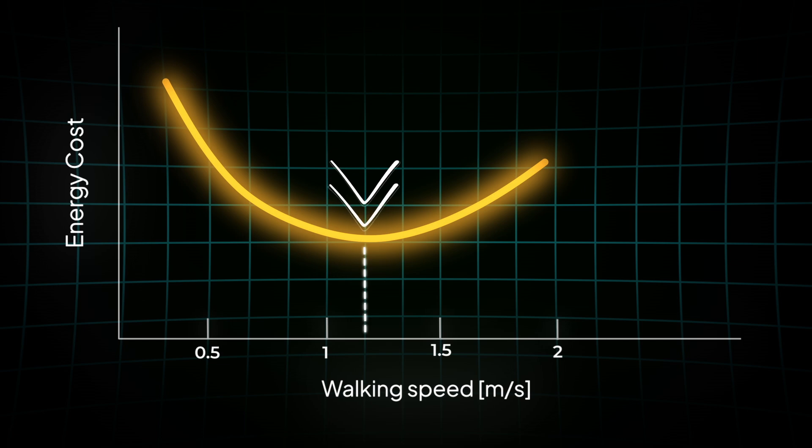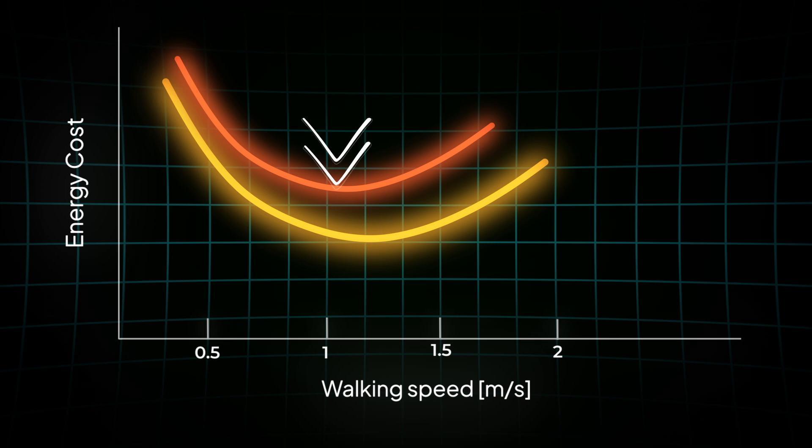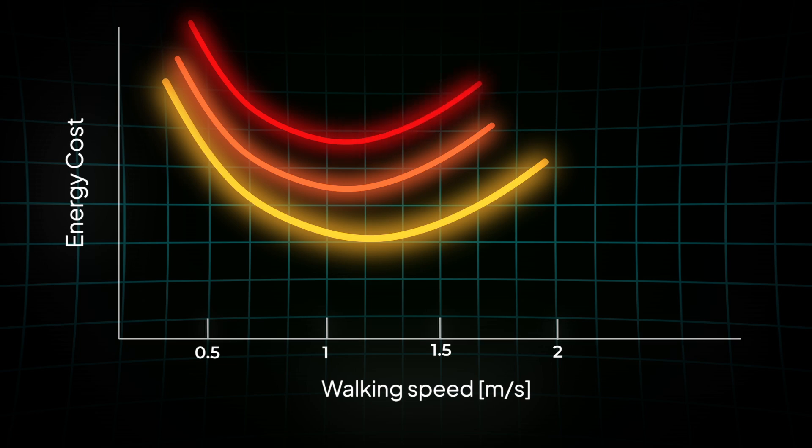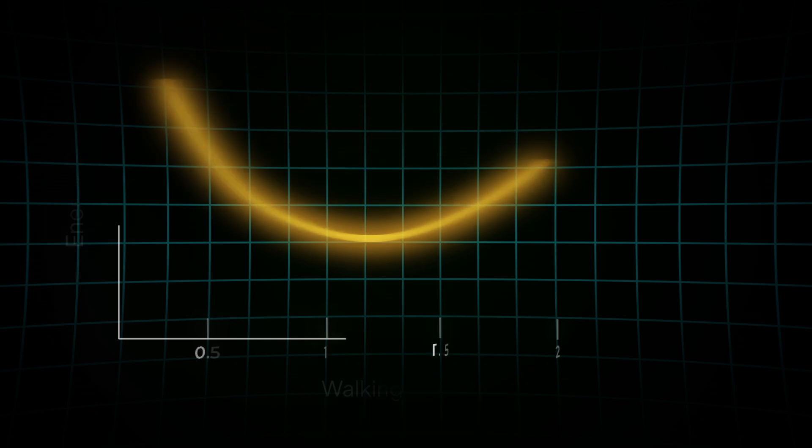Now imagine losing part of your lower limb. Suddenly your body has to work harder, a lot harder to move. That sweet spot shifts, and walking the same distance at the same speed takes much more effort. So does that mean the higher the amputation level, the slower the walking speed? Well, yes and no. Let's unpack why.